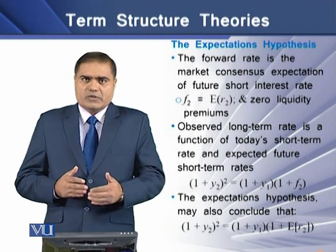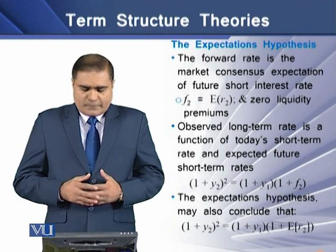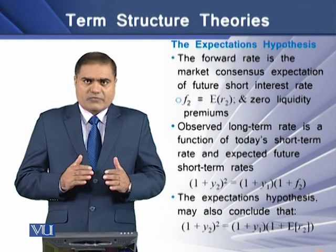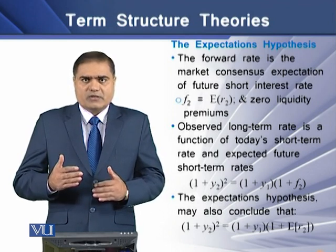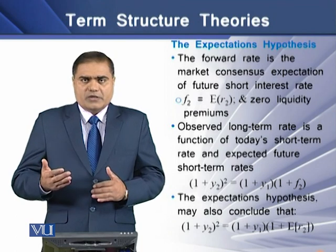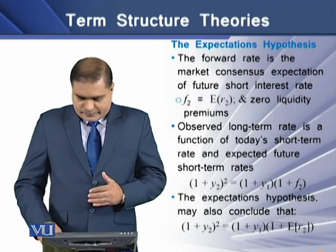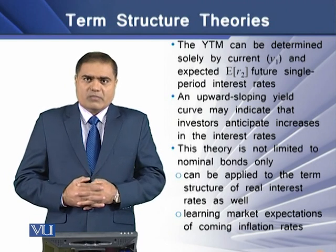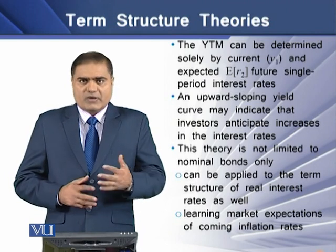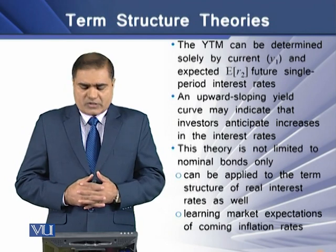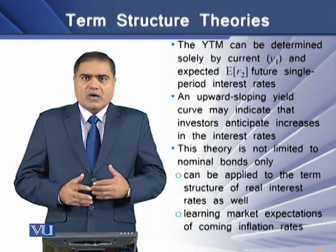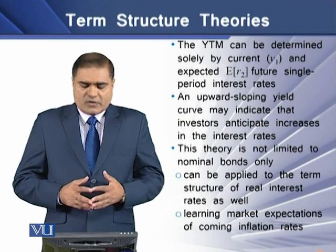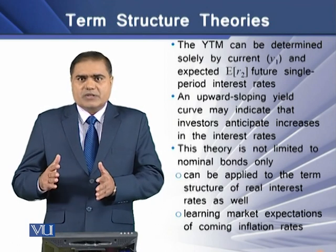This proves that the forward rate is a function of the expected rate of return for the second year. The YTM can be determined solely by the current yield y1 and the expected rate of return ER2, which is the expected return in the second year. It is a future single interest rate.